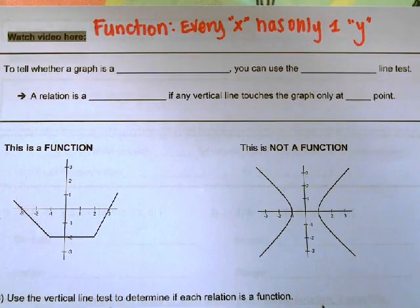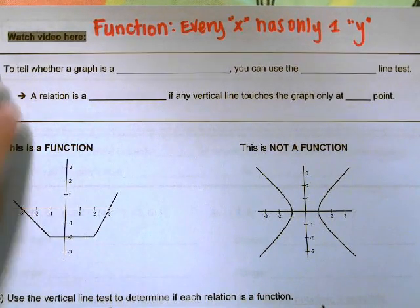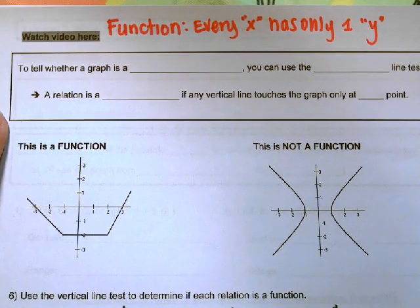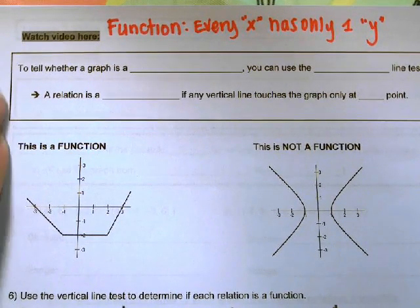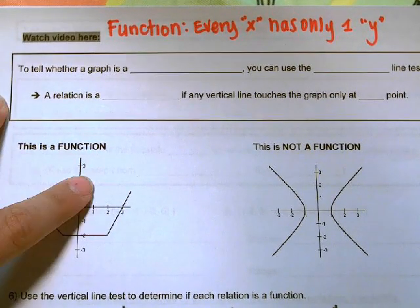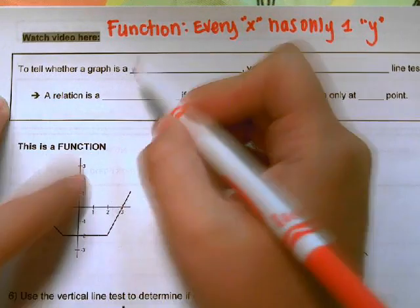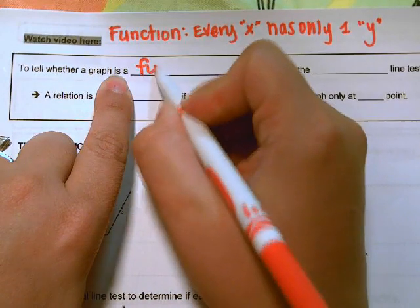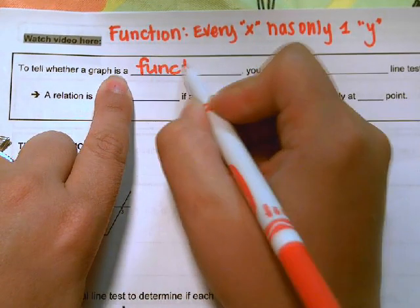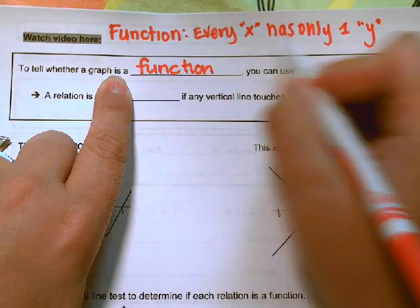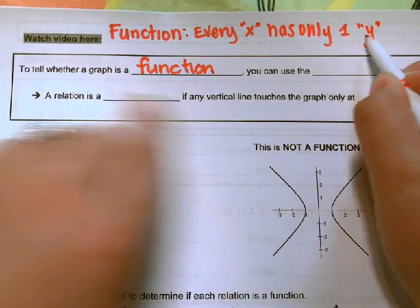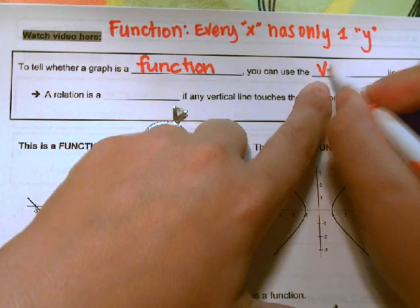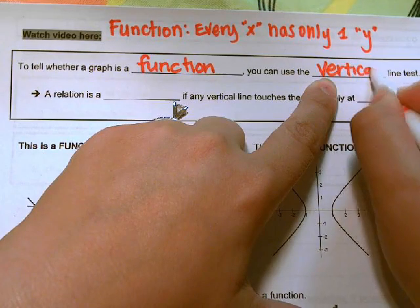In this video we are going to continue with identifying whether a relation is a function, but this time we are going to utilize the vertical line test. To tell whether a graph is a function, every x has only one y, and you can use the vertical line test to do the same thing.